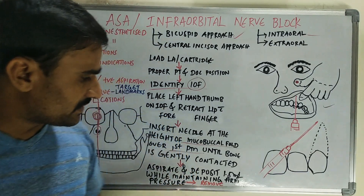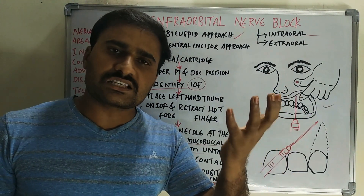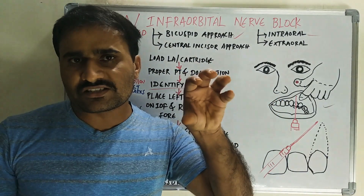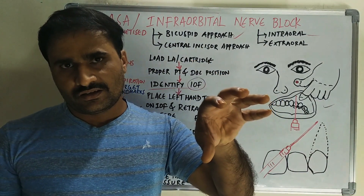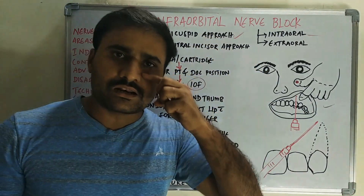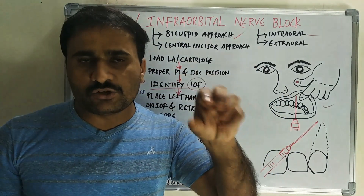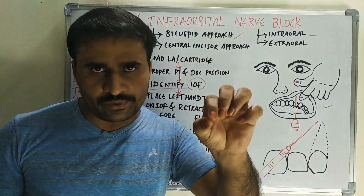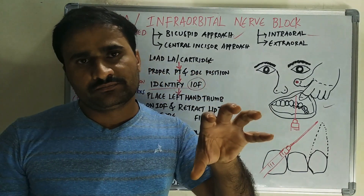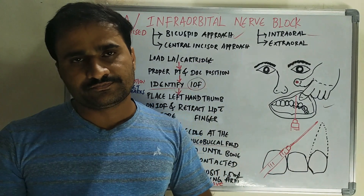Remove the syringe and wait three to five minutes. Then check for subjective symptoms: due to anaesthesia of the terminal branches, the patient will report numbness of the lower eyelid, lateral part of the nose, and upper lip. Objectively, confirm with instrumentation — if there is no pain during the procedure, ASA is blocked.